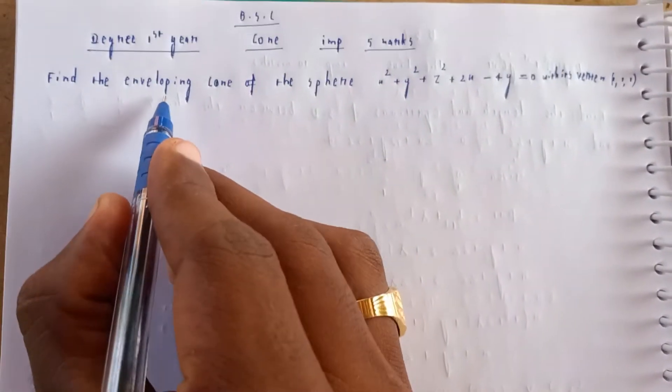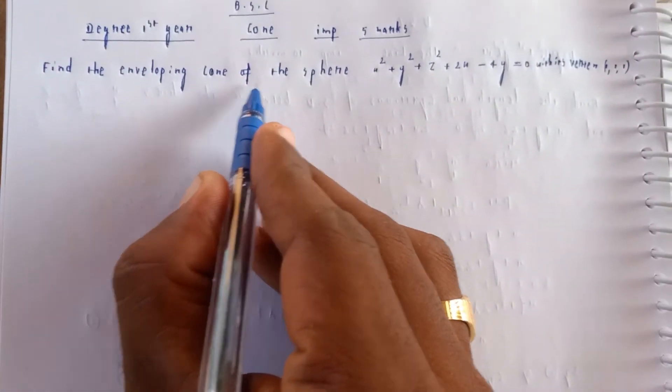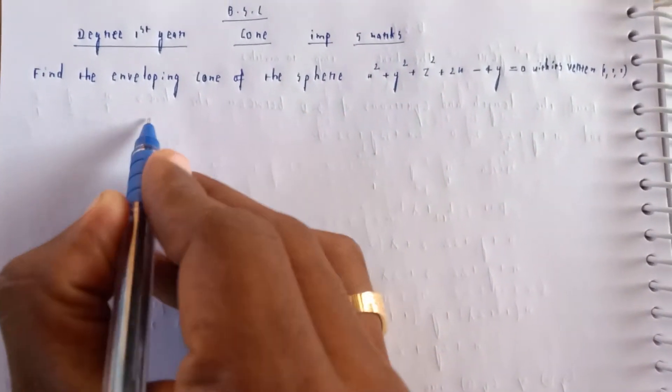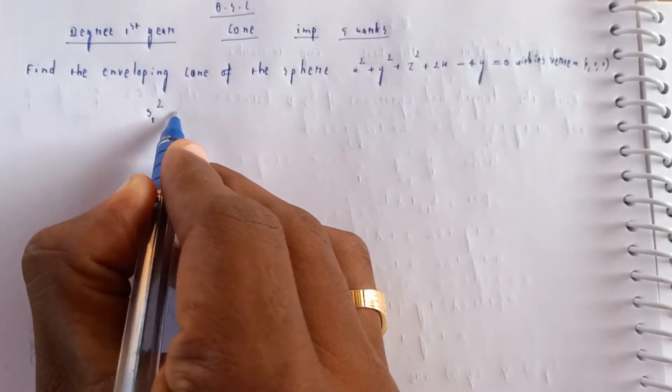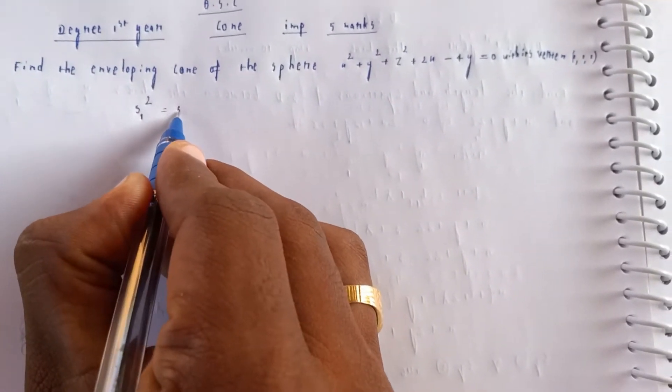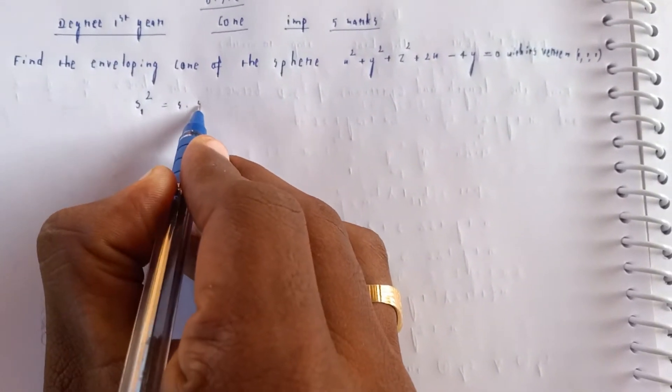The enveloping cone of the sphere uses a simple formula. The formula is T² = S · S₁.